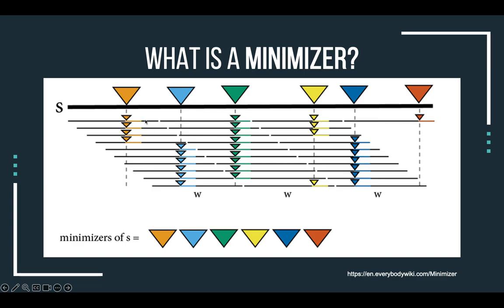For each k-mer we apply the hashing function that we defined, and then we select the k-mers that got the lowest values of this function. After that, we can represent S as this set of minimizers instead of the entire sequence.